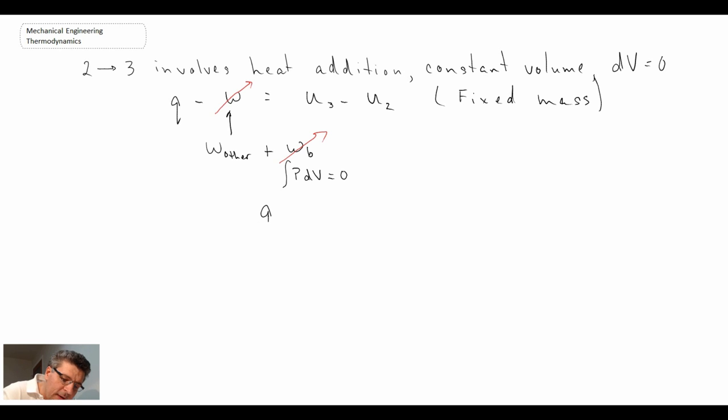Well if we have fixed volume, that is going to be 0. And consequently that term disappears, and the work term here disappears. And then what we're left with is Q in is equal to U3, so the internal energy at 3 minus the internal energy at 2.